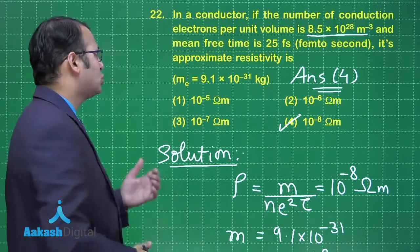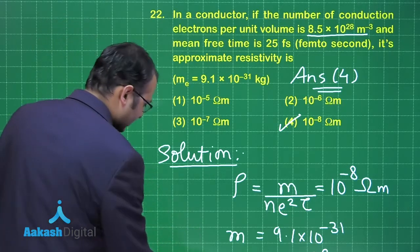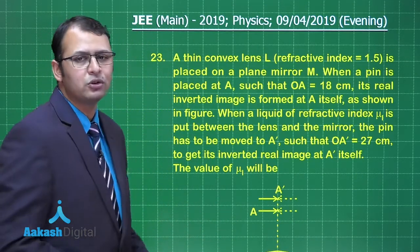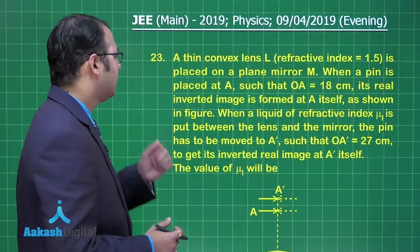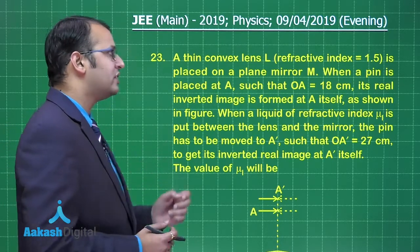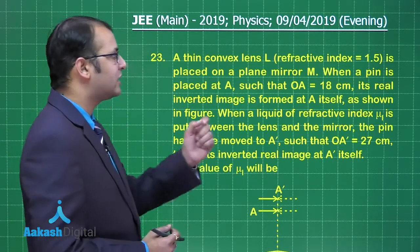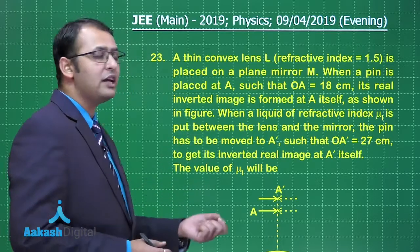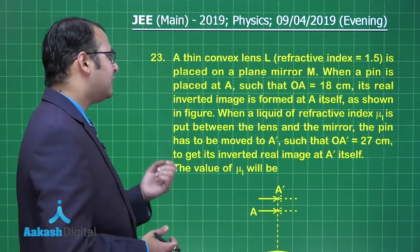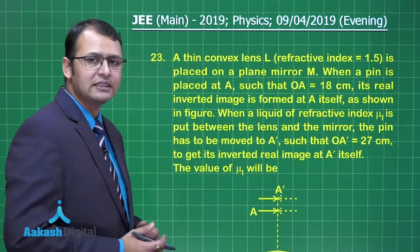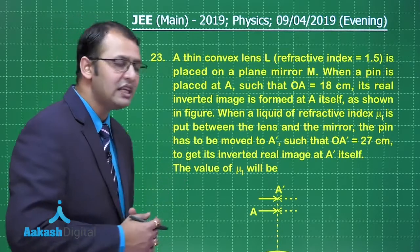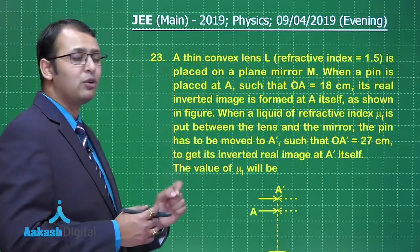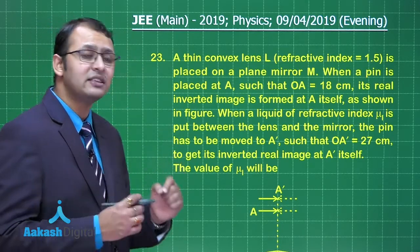Now let's move on to question number 23. This question belongs to the section of optics. A thin convex lens L having refractive index 1.5 is placed on a plane mirror M. When a pin is placed at A such that OA equals 18 centimeters, its real inverted image is formed at A itself.